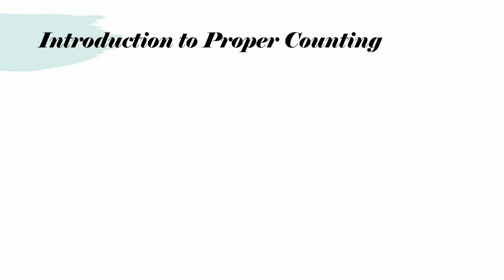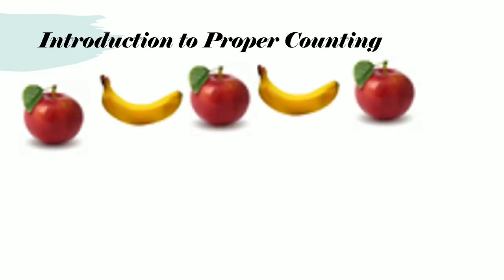Let us first begin with the proper way of counting. If I were given the task to count an assortment of fruits, the first thing I would do is group the fruits according to their similar characteristics. That is, I would put the apples together and the bananas together.